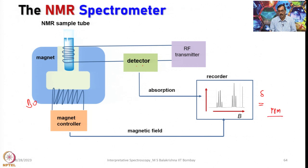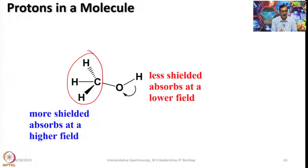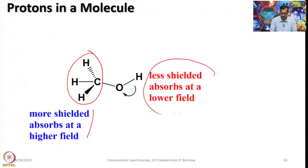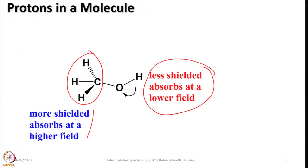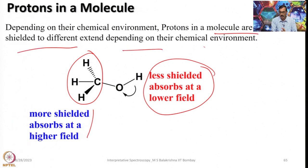When referring to chemical shift, use either delta or PPM. Looking at a simple molecule for 1H NMR - in methanol, some protons are more shielded and observed at higher field, while others are less shielded and observed at lower field. Depending on their chemical environment, protons in a molecule are shielded to different extents.